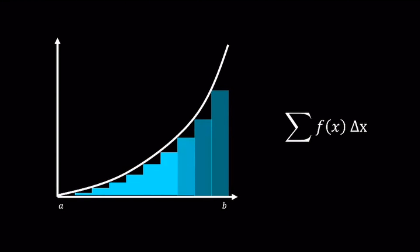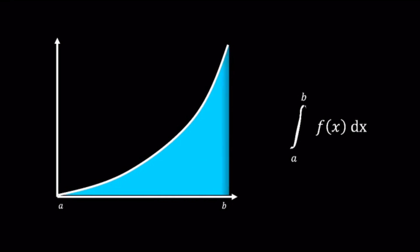But if we let delta x become infinitesimally small, we use dx instead. At this point, the summation symbol changes to an integral sign, which is like a smooth version of the summation symbol.